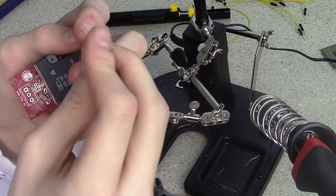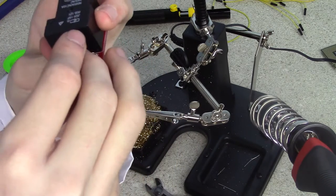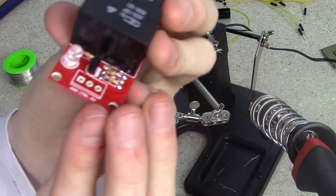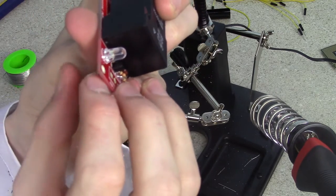Next, bend the legs on the transistor so that it fits into the bottom middle slot. Then, solder it into place after you make sure it is facing the right direction.